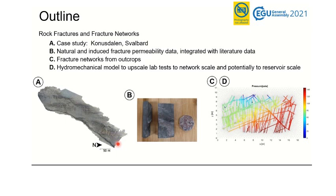I will present a procedure developed to establish the stress-permeability relationship in a low-permeability fractured formation. It is applied to calculate effective permeabilities for a case study in the Cretaceous caprock in Svalbard. The procedure involves linking experimentally determined fracture aperture and natural fracture network maps with a linear elastic mechanical model to account for the effect of applied stress on fracture aperture and permeability. The rock matrix is considered impermeable so that flow can take place only through the fractures. I will first describe the fault and fracture network from the study case, then show the outputs of the laboratory stress-permeability measurements, and finally discuss the hydromechanical model for upscaling effective permeability.